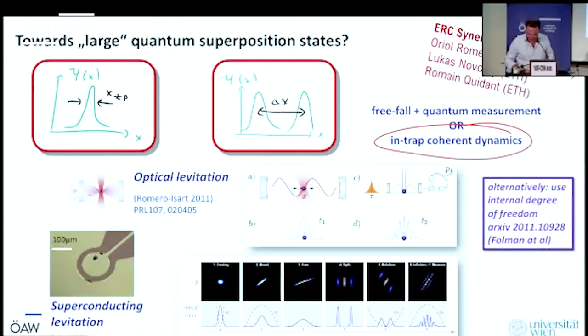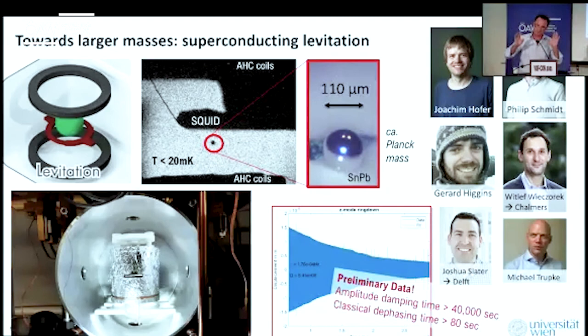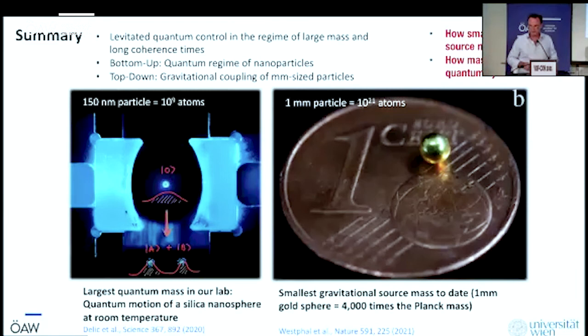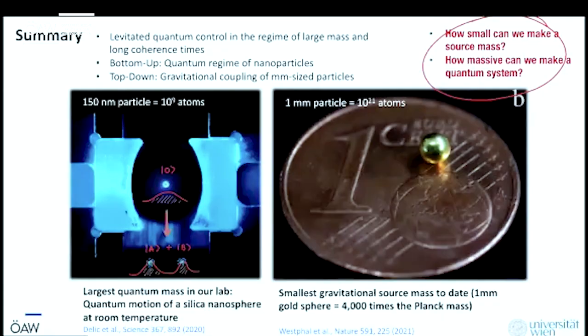Going towards larger masses with super long durations. This is my second summary of the day. It's totally different than the first one. But as you can see, these are the two questions that we need to address in order to experimentally tackle the quantum gravity interface. How small can we make a source mass? How massive can we make a quantum system? Thank you very much.